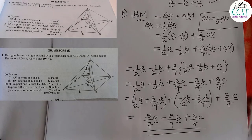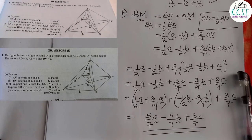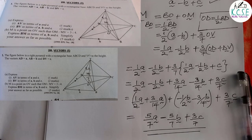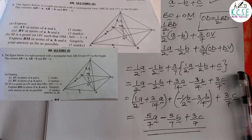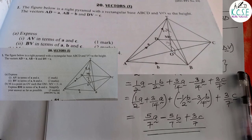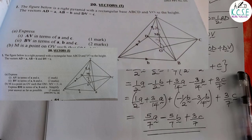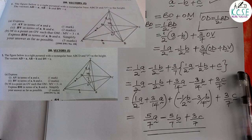And you've done the question. All parts are answered. The question was 8 marks. BM is answered, AV is answered, and BV is answered. That is simply how you're supposed to solve that question. Thank you.